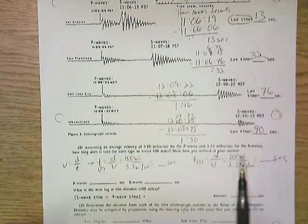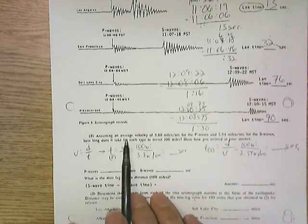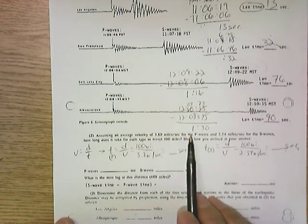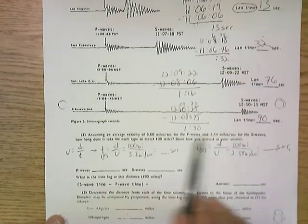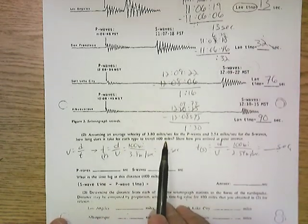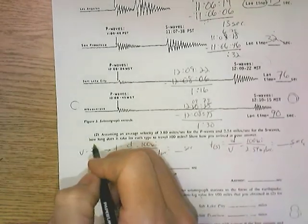Now we have these times, we know the lag time, but we don't have anything to refer that to, so we have to now find, if we know the velocity, assuming an average velocity of 3.8 miles per second for the P wave and 2.54 miles per second for the S wave, how long does it take for each type of wave to travel 100 miles? Show your work and how you arrived at this answer.